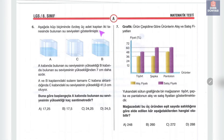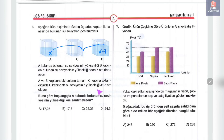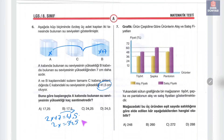Altıncı soruda küp biçiminde özdeş 3 kaptan A ve B'deki su seviyeleri verilmiş. A kabındaki su seviyesi B'den 7 santim daha az. A=x, B=x+7; ikisini üçüncüye boşaltınca 41,5'e eşit. 2x+7=41,5, 2x=34,5, x=17,25 santimetre.